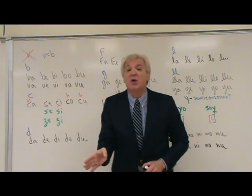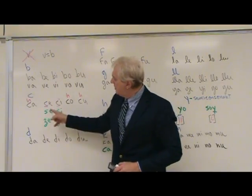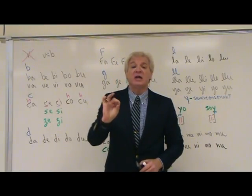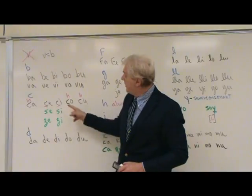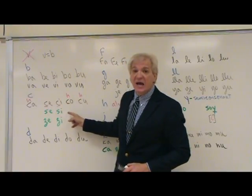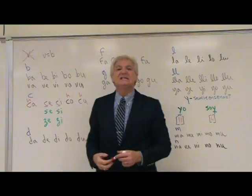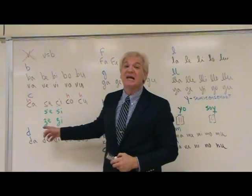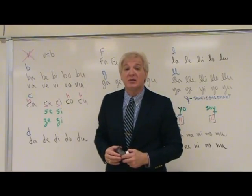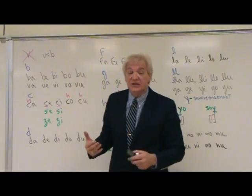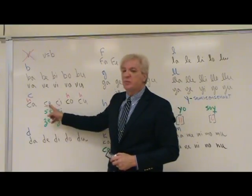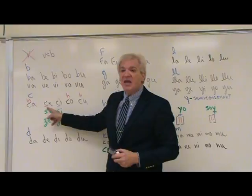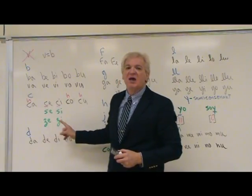There are three possible combinations of letters that give you the sound Se: Ce, Se, and Ze. Similarly, there are three combinations for Si: Ci, Si, and Zi. Of course, in Spain the Z is not pronounced as S as we do in Latin America — it's pronounced like the English 'th'. So in Spain they would say Ce as 'the', Ci as 'fi'.